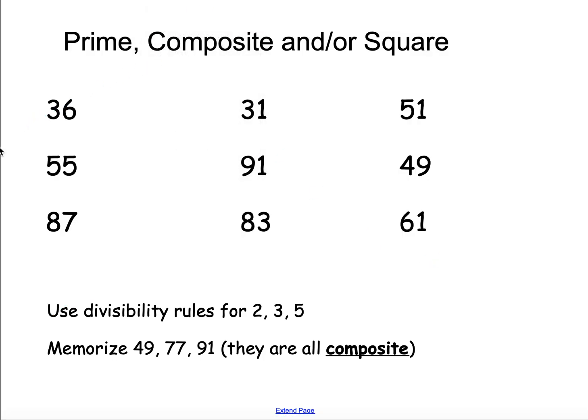So, thinking of those strategies, I'm going to decide prime, composite, and or square. 36, it's an even number, so that means it is composite because it's divisible by 2. I also happen to know 6 times 6 is 36, so it is a square number.